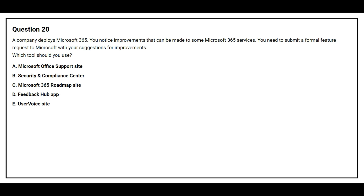Question number 20. A company deploys Microsoft 365. You notice improvements that can be made to some Microsoft 365 services. You need to submit a formal feature request to Microsoft with your suggestions for improvement. Which tool should you use? Option A: Microsoft Office Support Site. Option B: Security and Compliance Center. Option C: Microsoft 365 Roadmap site. Option D: Feedback Hub App. Option E: User Voice Site. The correct answer is Option D, Feedback Hub App.